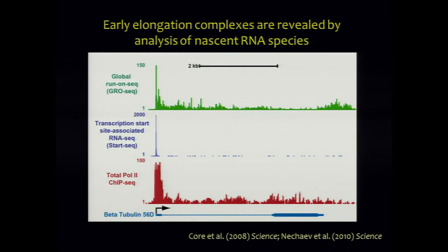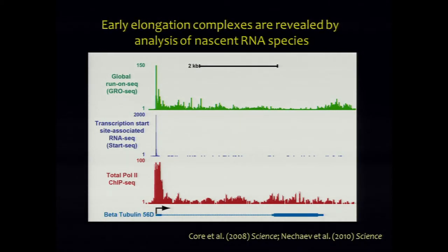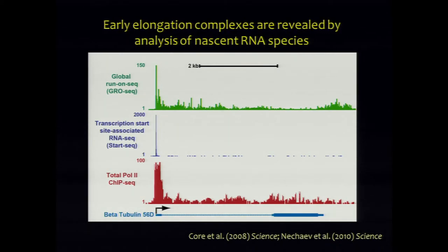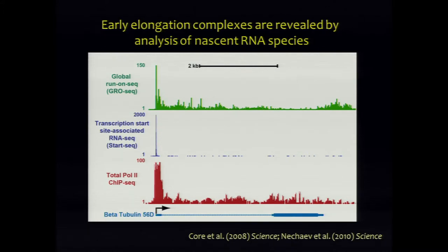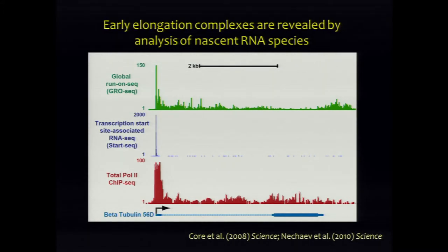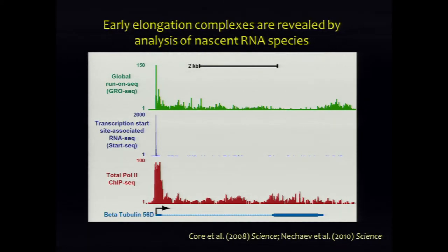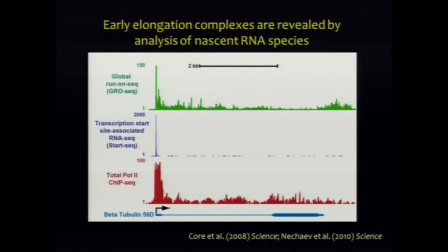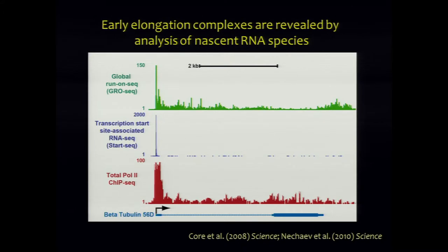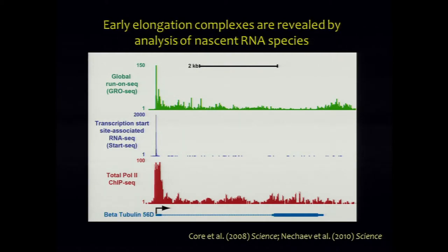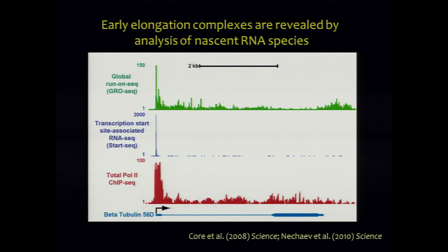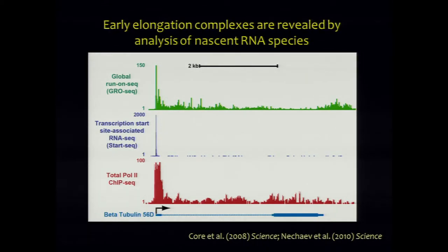Genomics enabled basic biology to make a leap, but then basic biology had a new question: we had found Pol II sitting at the promoter, but was it actually engaged in transcription? Was this the same thing John Liss had been talking about for three decades? Both Leighton Koren in John's lab and Sergei Natchayev in my lab wanted to develop techniques to look at the nascent RNA generated by paused Pol II or by elongation-competent transcription complexes across the genome.